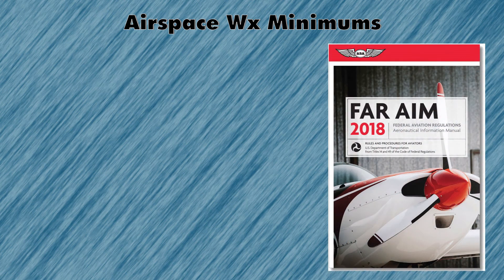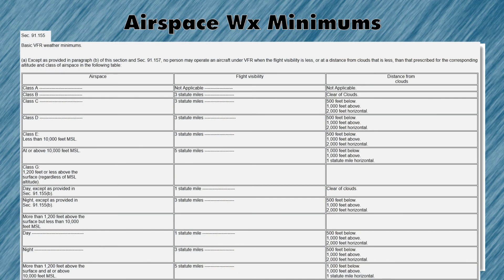If you would like to find the weather minimums for yourself, they're located in FAR Part 91.155. You'll find a table that looks just like this, and it's something that you absolutely have to have memorized and know before you go flying in any sort of airspace.